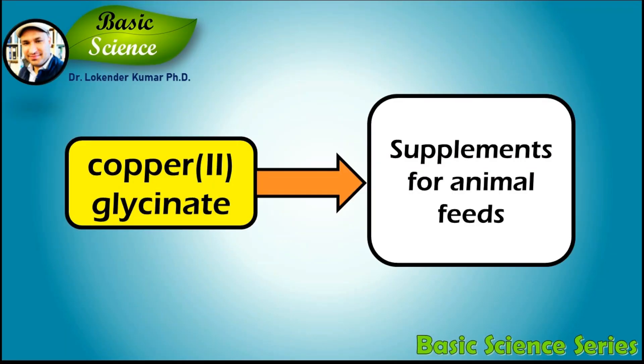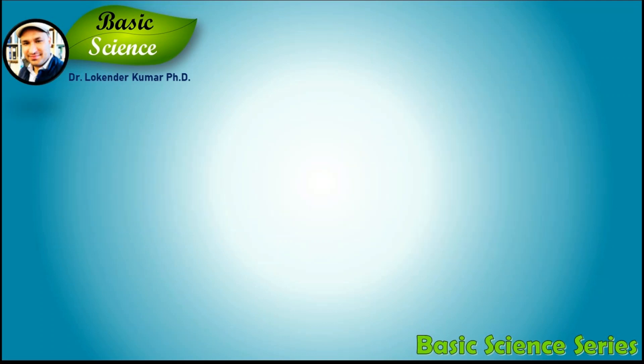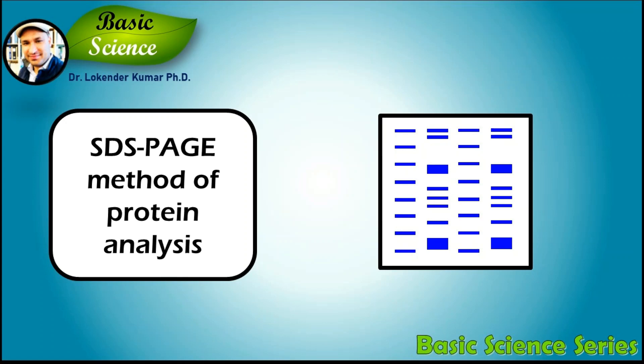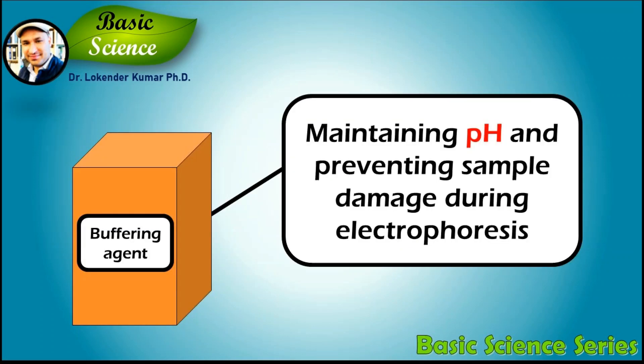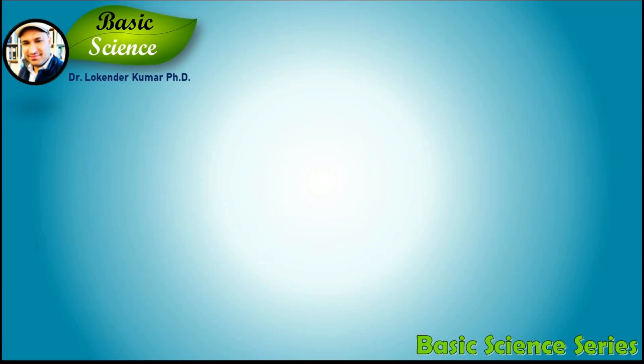Metal glycinate complexes — for example, copper glycinate — are used as supplements for animals. Glycine is also a significant component of some solutions used in the SDS-PAGE method of protein analysis. It serves as a buffering agent, maintaining pH and preventing sample damage during electrophoresis.